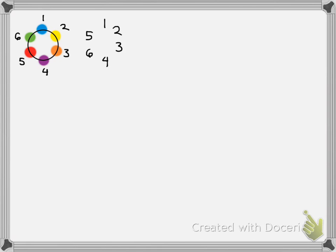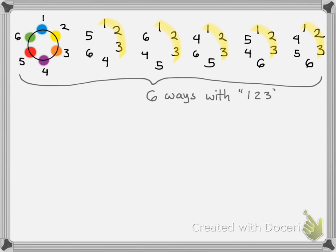So here's another bracelet with the beads in order one, two, three, four, six, five. And then here's another pair and another pair. You'll notice what all of these have in common is that they have the beads one, two, and three all together in a row.